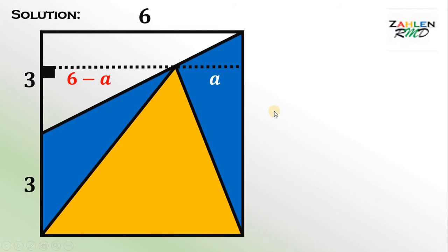Next, we will use the fact that the areas of these blue triangles are equal. So we will use the formula 1 half times base times height. Now, the area of this blue triangle on the left side is equal to 1 half times the base, which is 3, and the height of 6 minus A.